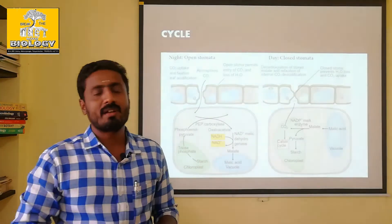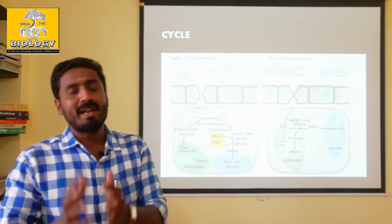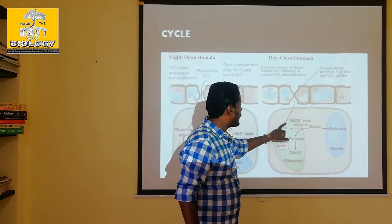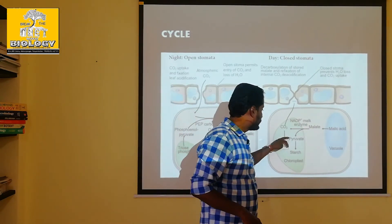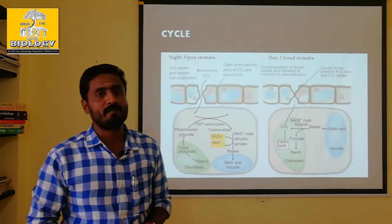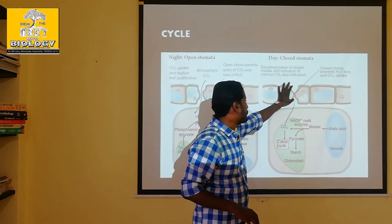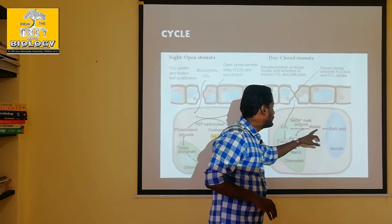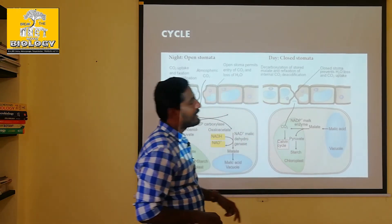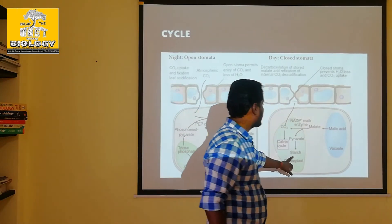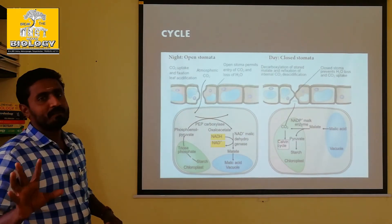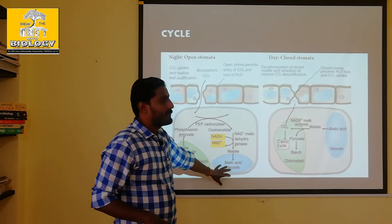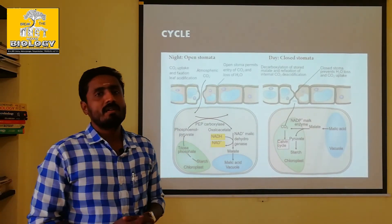In the daytime, the stomata is closed, so carbon dioxide cannot enter. In this situation, the malic acid stored in the vacuole is released and converted into carbon dioxide. This carbon dioxide then enters the Calvin Cycle for photosynthesis. This is the basic concept: at nighttime, stomata open, CO2 is fixed into malic acid and stored; at daytime, stomata closed, malic acid releases CO2 for the Calvin Cycle. This is the main process of the CAM cycle.